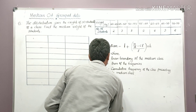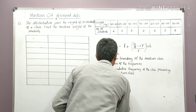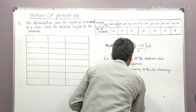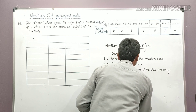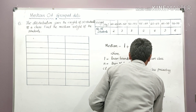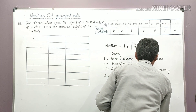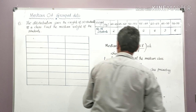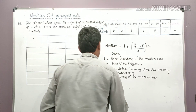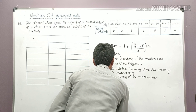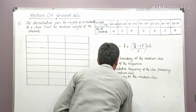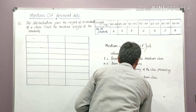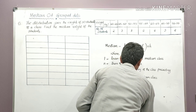F is equal to the frequency of the median class. H is equal to the size of the class.